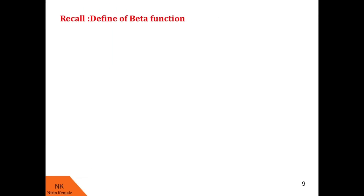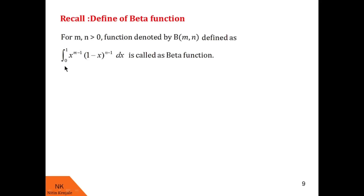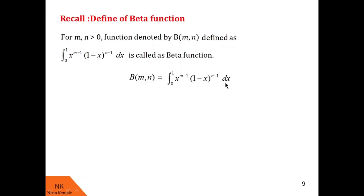We define, for m, n greater than 0, beta of (m,n) as the integral of x raised to m minus 1 into 1 minus x raised to n minus 1 dx over the limit 0 to 1. We call this definition the first form of beta(m, n).